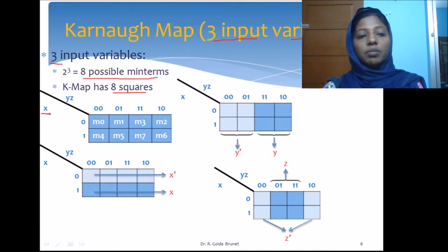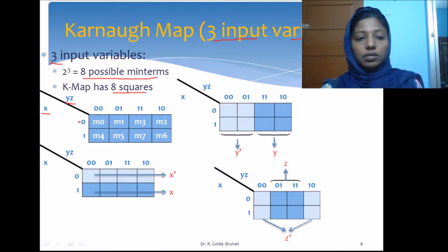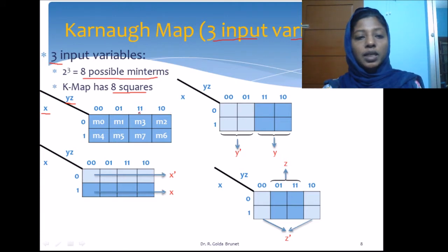We have the variable x along the row and yz along the columns. X can take either 0 or 1, and yz can take the combinations 00, 01, 11, and 10 as their values.